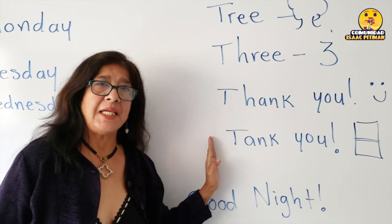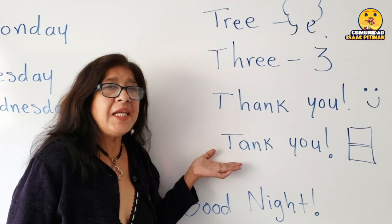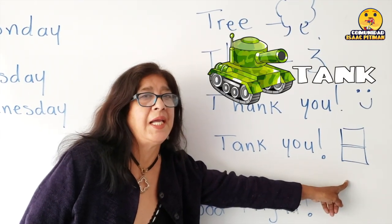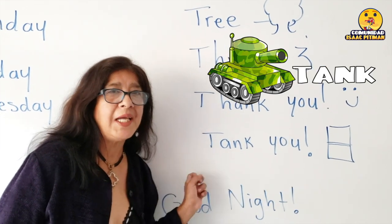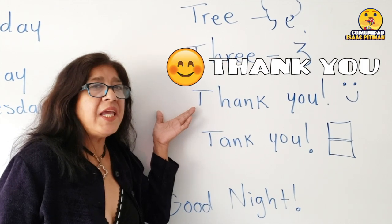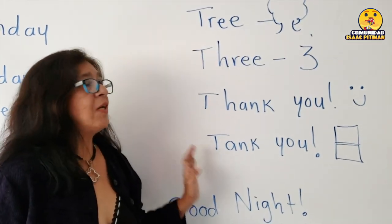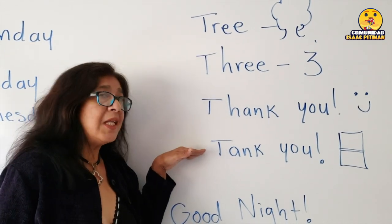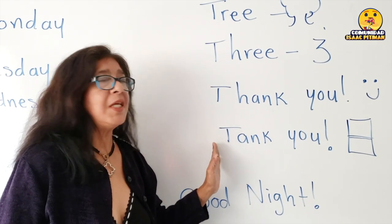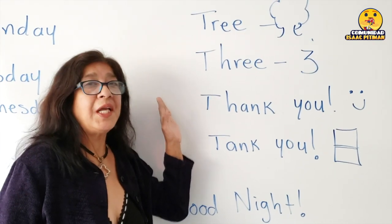O cuando ellos dicen gracias — lo hacemos como una broma — porque ellos me dicen 'tank you' y yo les digo que me están diciendo que yo soy un tanque, cuando en realidad lo que deben decir es 'thank you, thank you.' Ya cuando ellos empiezan a comprender, se dan cuenta de que por una mala pronunciación dicen algo que no tiene nada que ver con lo que quieren expresar. Ese sería un segundo ejemplo.